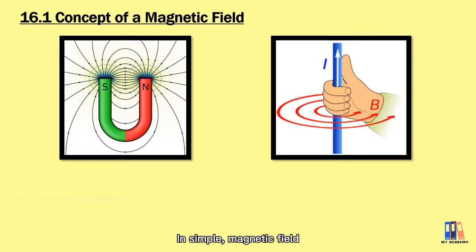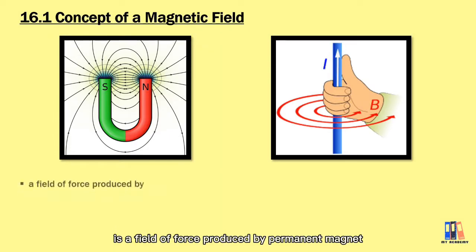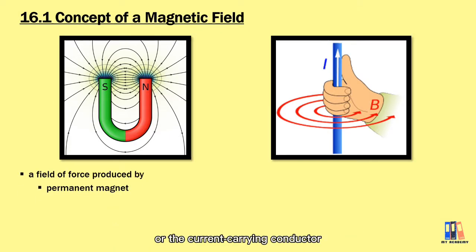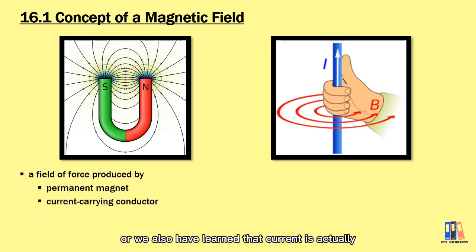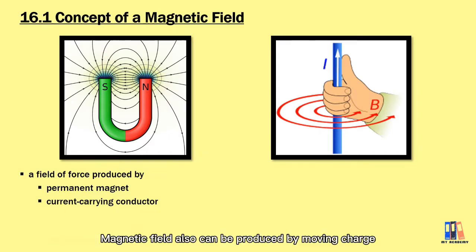In simple terms, a magnetic field is a field of force produced by a permanent magnet or a current-carrying conductor. We have also learned that current is the rate of flow of charge, so a magnetic field can also be produced by a moving charge.